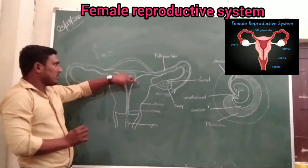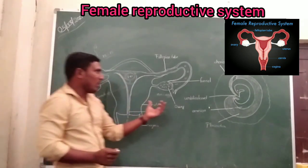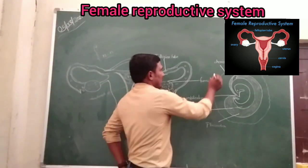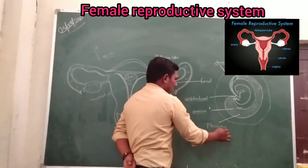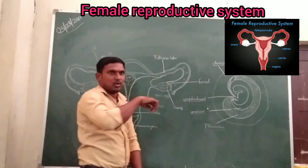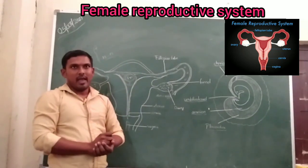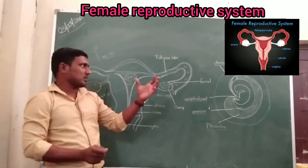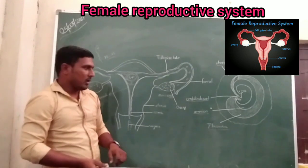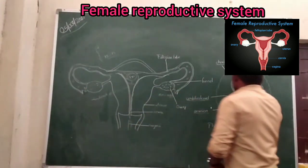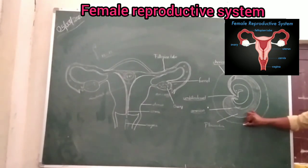After implantation, the embryo forms different layers. It mainly contains four types of layers: one is called the chorion, the amnion, the yolk sac, and the allantois — or amniotic placenta. The chorion is the outer membrane with finger-like projections.